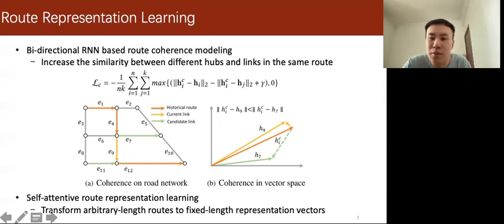So, we can model the relationships between the current vertex and its prefix or suffix subroute. Additionally, in order to transform arbitrary-length routes into fixed-length representation vectors,